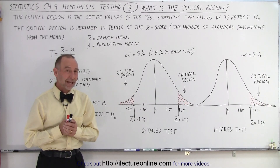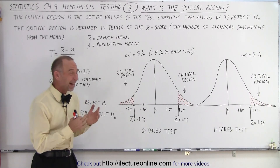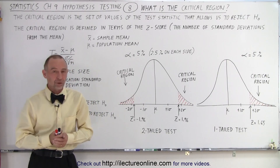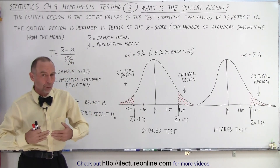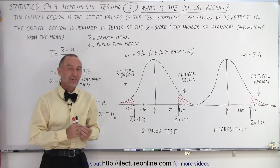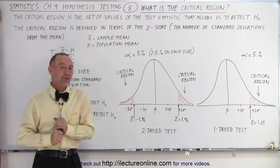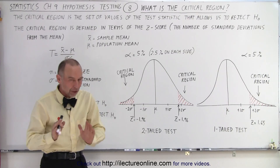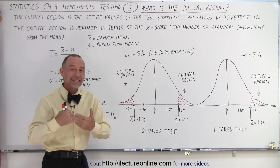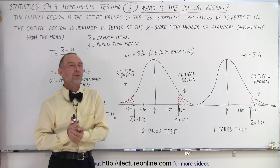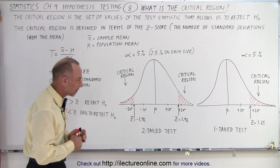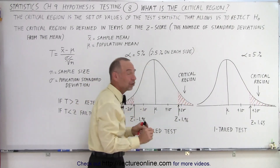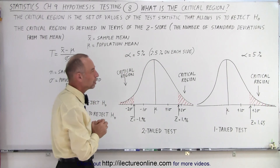Welcome to my lecture online. There are a lot of things to be defined when we're dealing with the null hypothesis, alternative hypothesis, or just doing a hypothesis test. The next thing we need to understand is what we call the critical region. We've been drawing the critical region but not specifically defining it — it's that small region at the end of the distribution of the population.